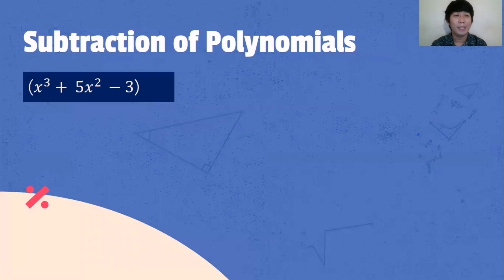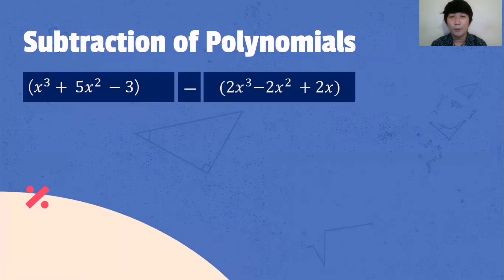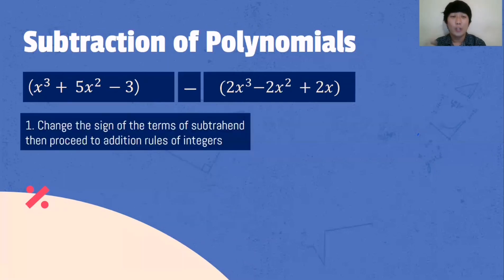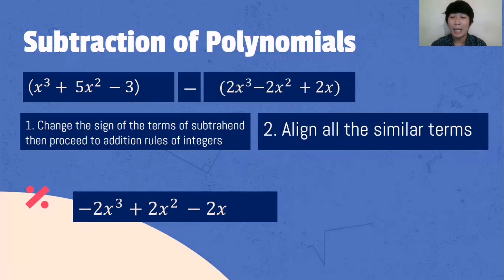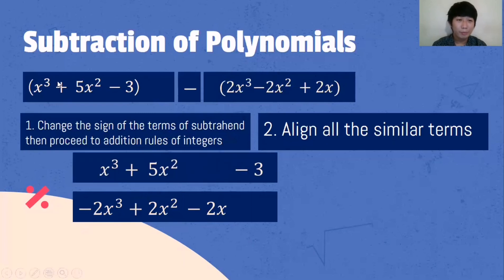Another example: x cubed plus 5x squared minus 3, minus the quantity of 2x cubed minus 2x squared plus 2x. Again, the first process: change the sign of the terms of the subtrahend, then proceed to addition rules. From positive 2x cubed, it becomes negative 2x cubed. From negative 2x squared, it becomes positive 2x squared. From positive 2x, it will become negative 2x. Then we align all the similar terms and proceed to addition.